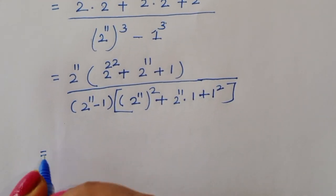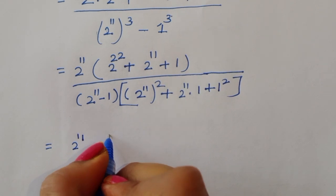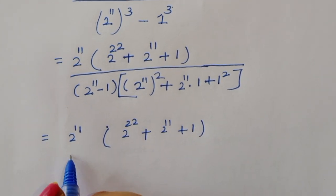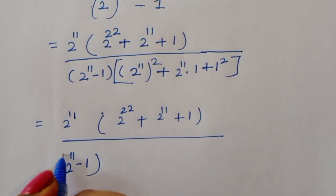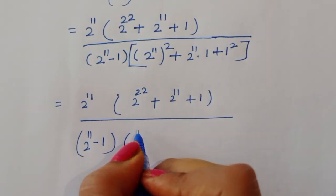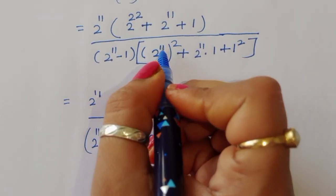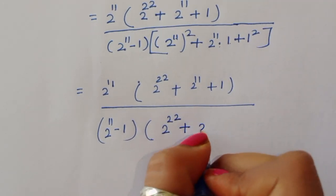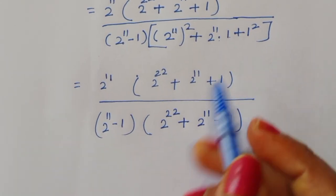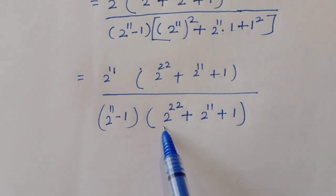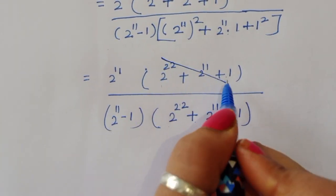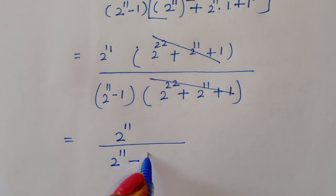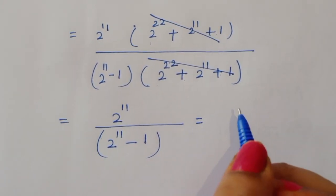The numerator has the term 2 power 11 times (2 power 22 + 2 power 11 + 1). The denominator expands to (2 power 11 minus 1)(2 power 22 + 2 power 11 + 1). We can cancel the common factor (2 power 22 + 2 power 11 + 1), leaving 2 power 11 divided by (2 power 11 minus 1).